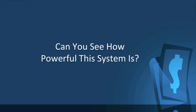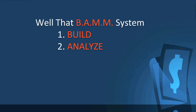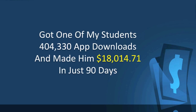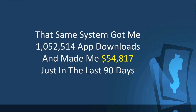Can you see how powerful this system really is? Can you see how just using one of the monetization strategies can make a ton of money? That system — Build, Analyze, Market, Monetize — got one of my students over 400,000 app downloads and made him $18,000 in just 90 days. Not bad for his very first app. That same system got me over a million app downloads and made me over $54,000 in just the last 90 days.